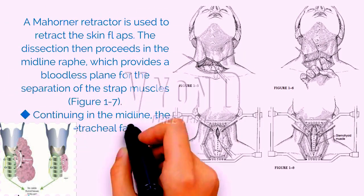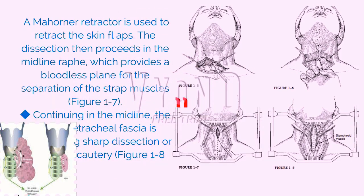A Mahona retractor is used to retract the skin flaps. The dissection then proceeds in the midline raphe, which provides a bloodless plane for the separation of the strap muscles, figure 1-7. Continuing in the midline, the loose pretracheal fascia is incised using sharp dissection or the electrocautery, figure 1-8.